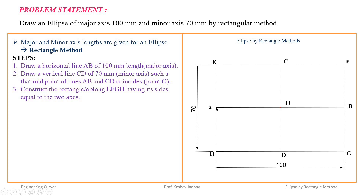Our ellipse passes through points A, C, B, and D. To draw a smooth curve we need more points. I will explain the next procedure to get more points so that we can draw a smooth curve.